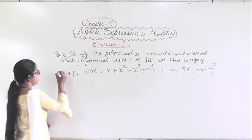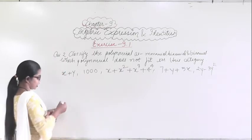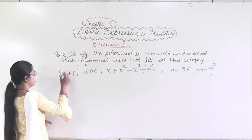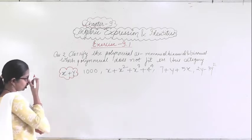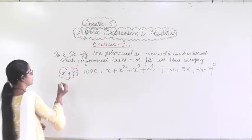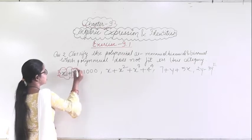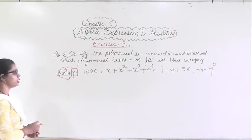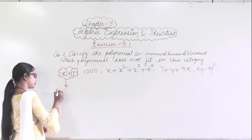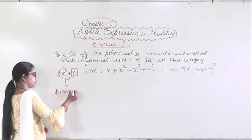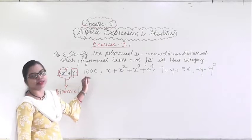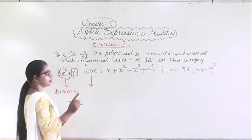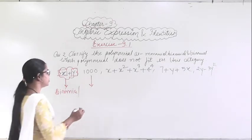So from here we have to categorize. Here it is given x plus y. If you can see, there are two terms — this is the first term and this is the second term. Two terms are there, so this will be a binomial. Here, 1000 is a single term — that means there is only 1 term, so it is a monomial.